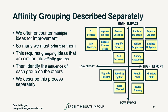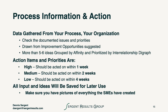Affinity grouping is an opportunity to further prioritize that first level of priorities — we will cover that separately. Think about the data and information gathered from the process and the organization. High priorities should be acted on within a week, medium opportunities within two weeks, and low priorities within four weeks. All of the input and ideas should be saved for later use, and we want to make sure we take pictures of everything the subject matter experts have created.